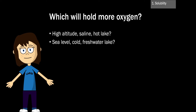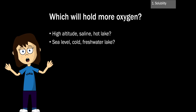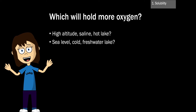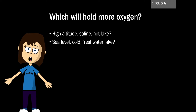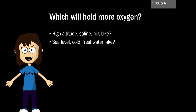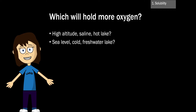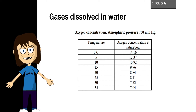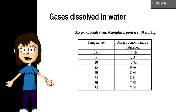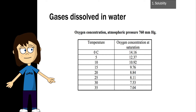To review: at 100% saturation, which kind of lake would have more oxygen — a high altitude saline warm lake, or a cold freshwater lake at sea level? The answer is obvious: a cold freshwater lake at sea level would have much more oxygen. For Wisconsin lakes, which are generally fresh and close to sea level, temperature is going to have the greatest effect on oxygen solubility throughout the year. At zero degrees Celsius, oxygen solubility is about 14 milligrams per liter, and it's about half that as temperature rises to 30 degrees Celsius.